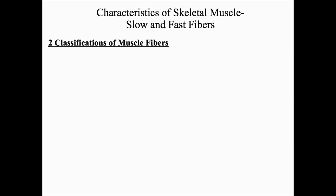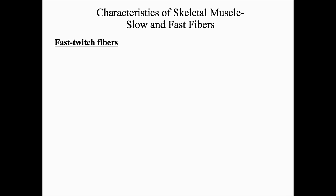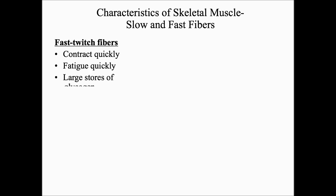Let's look at the two classifications of muscle fibers that help generate this force. The first type is the fast-twitch fiber and the second is the slow-twitch fiber. Fast-twitch fibers contract quickly, meaning they're used for explosive movements, and because of this, they fatigue quickly. Fast-twitch fibers are also large storages for glycogen, which can be converted into glucose used during cellular respiration for ATP production. Fast-twitch fibers undergo anaerobic metabolism, meaning they can break down glucose and form ATP in the absence of oxygen.